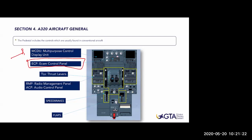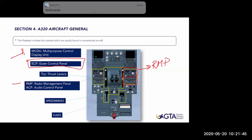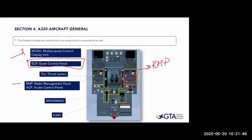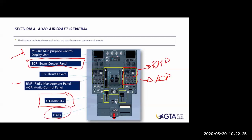We normally use the RMP to set frequencies and the ACP to transmit on those frequencies. Both are linked together and we need both to communicate with ATC or the company. Then we have the speed brakes and the flaps lever for landing. This is basically the layout of the pedestal.